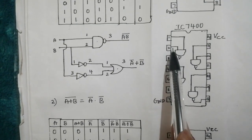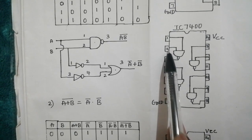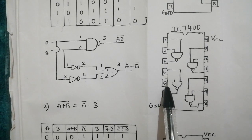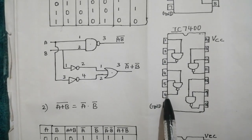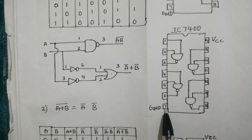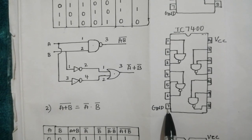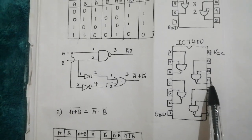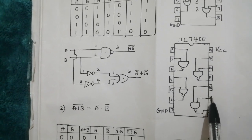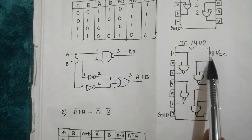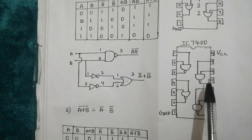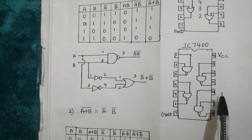So here if I observe the NAND logic gate, pin number one and two are acting as input, three is acting as output. Next four and five are acting as input, six is acting as output. Seventh pin is ground. We can also observe that 13 and 12 are acting as input, 11 is output, 10 and 9 are acting as input, 8 is output, and 14th pin is VCC. So this IC is a 14 pin IC.